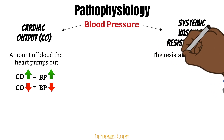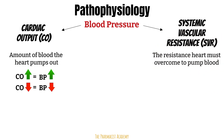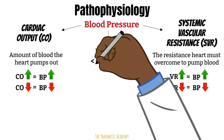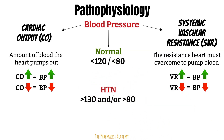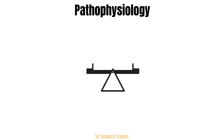The force or resistance that the heart must overcome to push blood through your body is the systemic vascular resistance, labeled here as SVR — sometimes referred to as total peripheral resistance. The higher the resistance, the higher the blood pressure. In normal circumstances, blood pressure should be less than 120 over 80. Patients with hypertension have a systolic and/or diastolic over 130 and/or over 80 respectively, accompanied by a chronic increase in cardiac output and systemic vascular resistance that overcomes the body's mechanisms that normally maintain blood pressure.